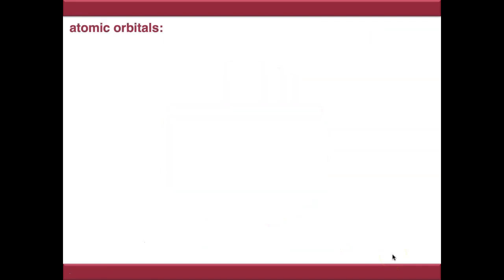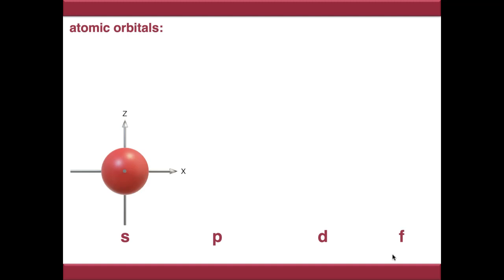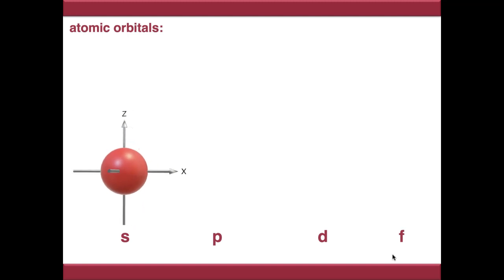Atomic orbitals are orbitals situated on an atom, and they come in four different flavours: S, P, D and F. S orbitals are perfectly spherical — essentially shaped like a football — and we can represent that like this.